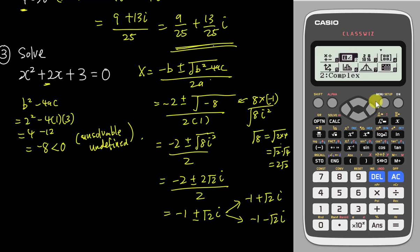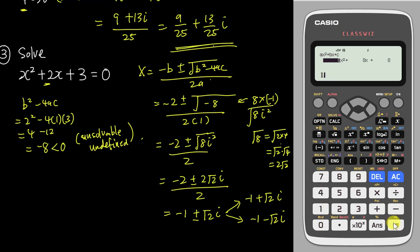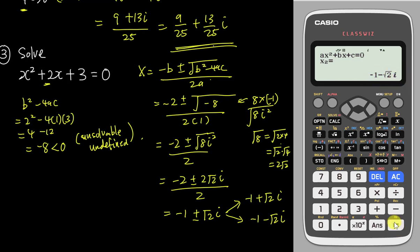So we have two answers: negative 1 plus square root 2 times i, and negative 1 minus square root 2 times i. The Casio calculator confirms this — even though the equation seems unsolvable, if you go into the equation solver, polynomial power 2, and enter x squared + 2x + 3, the calculator will still give the correct answers with i, showing the real part and imaginary part for each complex root.